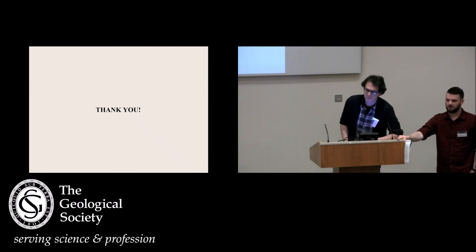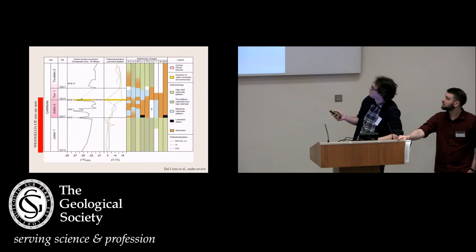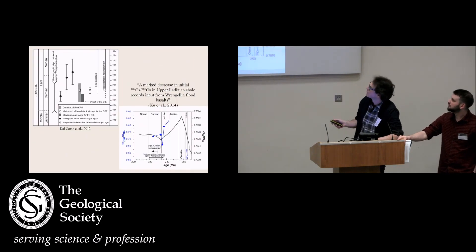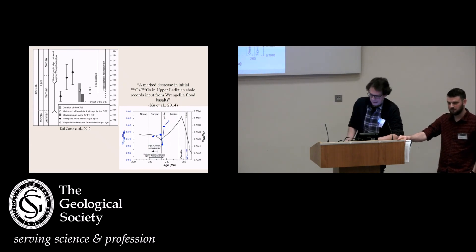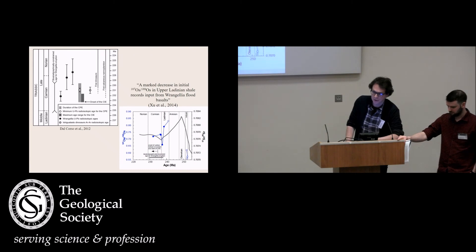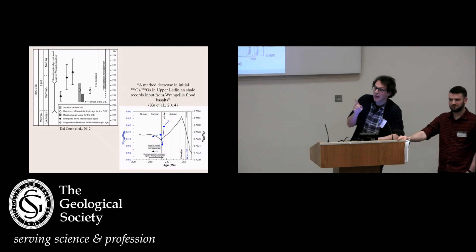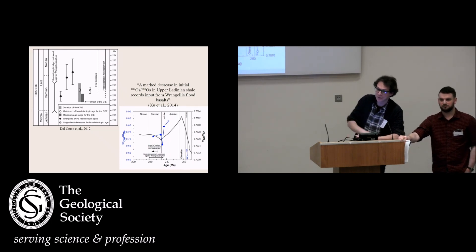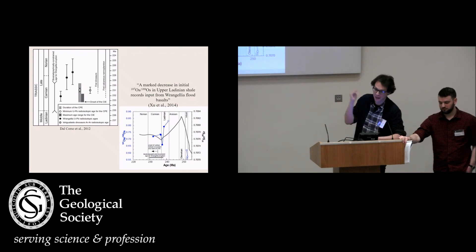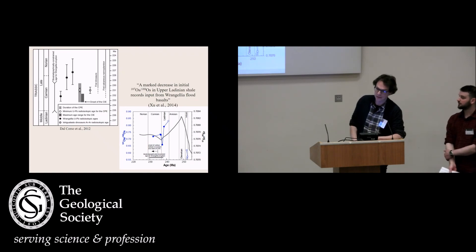Question about the Wrangellia dates: on the last slide showing Wrangellia ages, the data points seem widely spread from the middle-upper Carnian into the Norian — what age do you end up with? The ages are mostly argon-argon dates, and there are issues: many argon-argon ages have been reset to younger values due to later metamorphic/tectonic events during accretion, so the radioisotopic dating is not very reliable. The biostratigraphic age remains the most solid constraint.